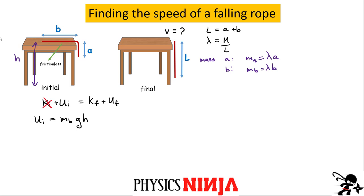Now, how do we deal with the section that is vertical — hanging off? What is the height of the center of mass of that section? The center of mass is located right at the midpoint of section A. So its height H_A can be written as H minus one-half A. So the gravitational PE of section A is mass_A times g times (H minus A/2).